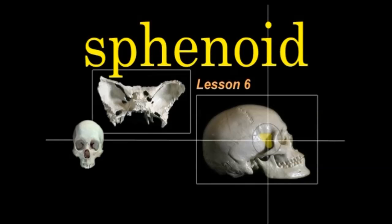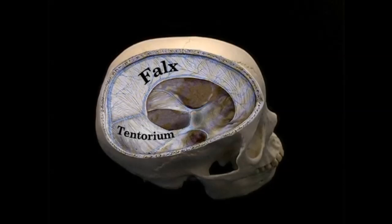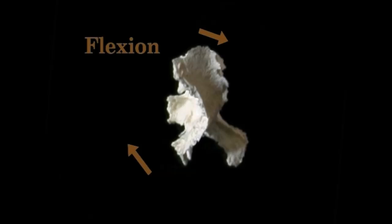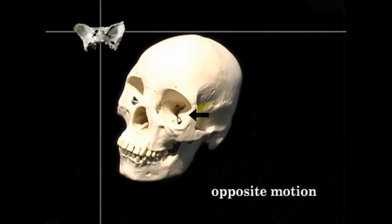The sphenoid is the keystone to the skull and provides the rhythm for the other cranial bones. Both the falks and the tentorium attach to the sphenoid. The sphenoid nosedives during flexion, then pauses and reverses this motion in extension, creating a lazy eight pattern. In the opposite motion model, each wing of the sphenoid alternately moves into flexion.